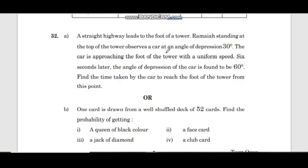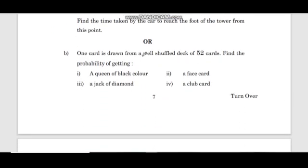Question 32: A straight highway leads to the foot of a tower. Ramaiah standing at the top of the tower observes a car at an angle of depression 30 degrees. The car is approaching the foot of the tower with a uniform speed. Six seconds later, the angle of depression of the car is found to be 60 degrees. Find the time taken by the car to reach the foot of the tower from this point. Or, one card is drawn from a well-shuffled deck of 52 cards. Find the probability of getting: a queen of black color, a face card, a jack of diamond, a club card.